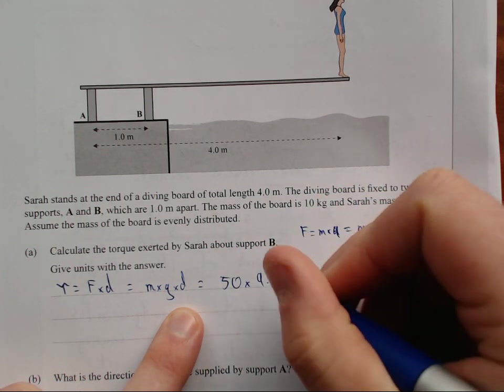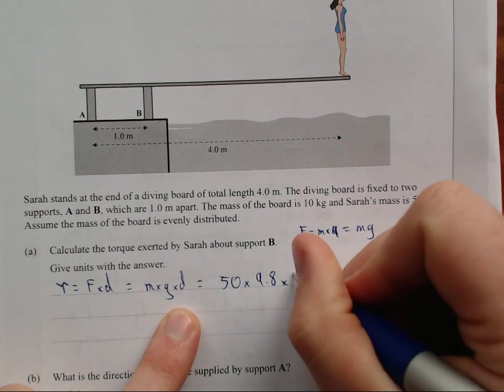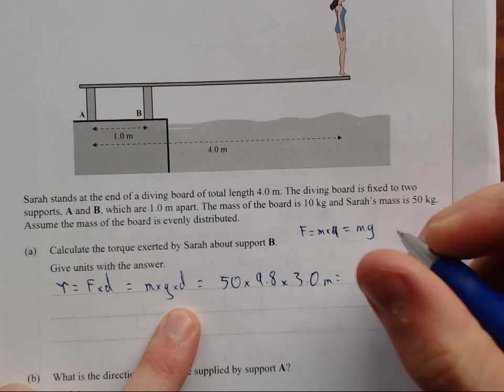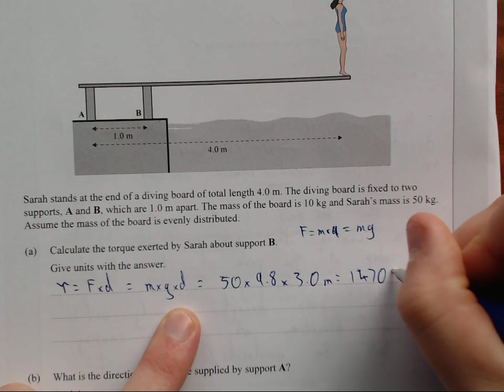So that is just 50 times 9.8, not 9.81, because level 2, times distance is 3 meters. 3.0 meters. And that is equal to 1470 newton meters.